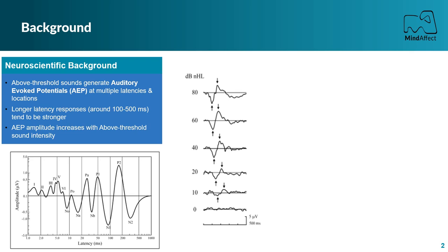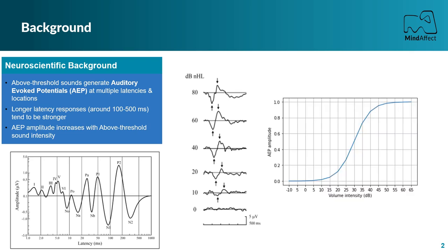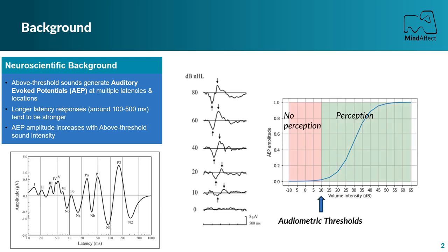The amplitude of these AEPs varies with the intensity of the stimulation — in other words, with the strength of the perception of the stimulation. By this means, we can estimate the auditory threshold at the volume intensity where the brain starts to perceive the stimulus.